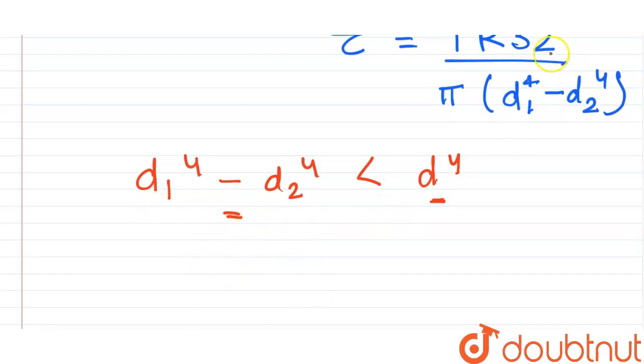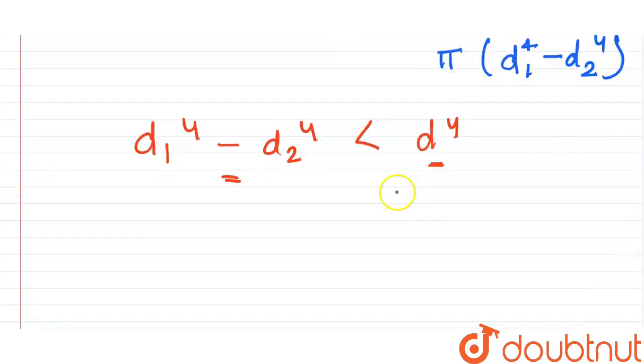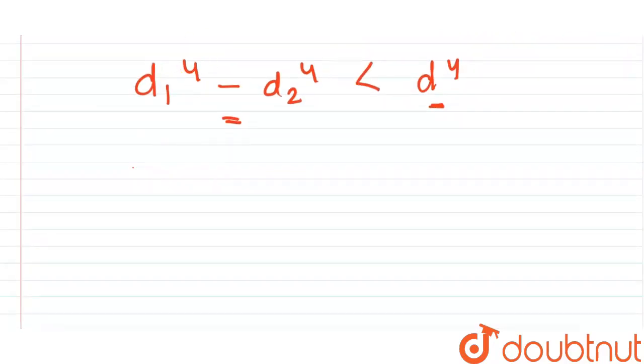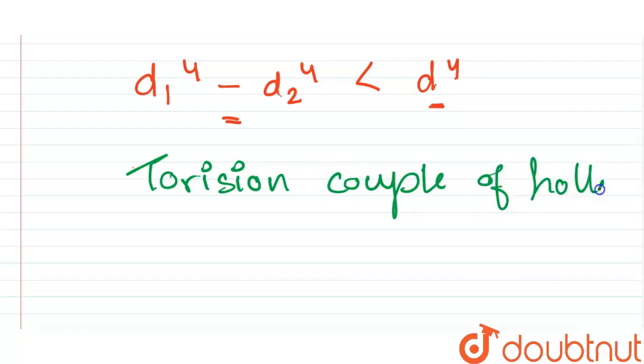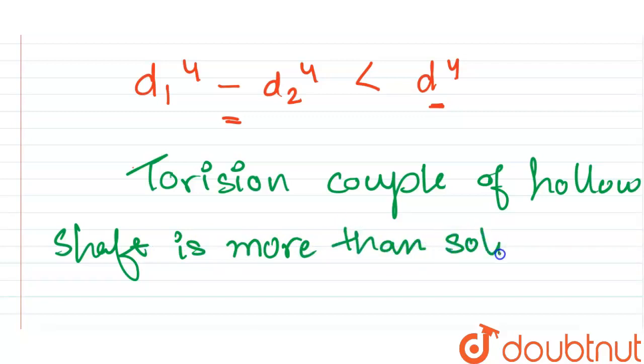All right, so from here, torsion couple of hollow shaft will be more because it is in the denominator. So torsion couple of hollow shaft is more than solid shaft, and therefore hollow shaft is more stiff than solid shaft.